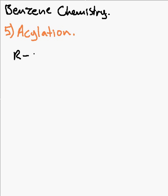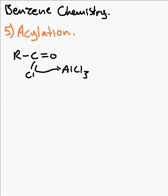We actually want an R-C=O plus — an acylium cation. The way we do that is by adding your Cl there, and if we use AlCl3, then all that will happen is this chlorine will end up being stuck to the AlCl3, which produces exactly what we want — that acylium cation — and of course AlCl4 minus on the metal.